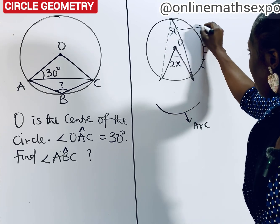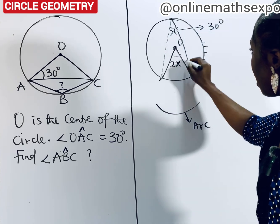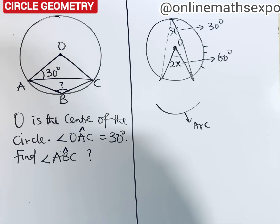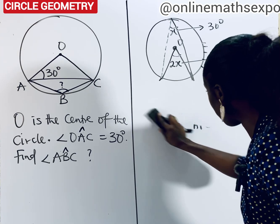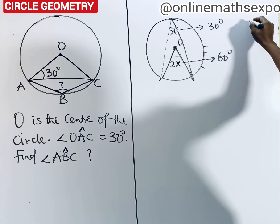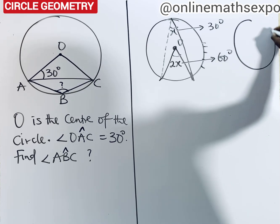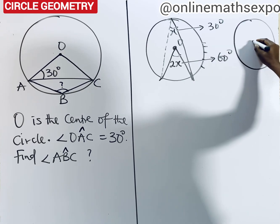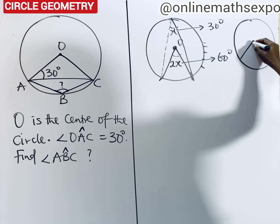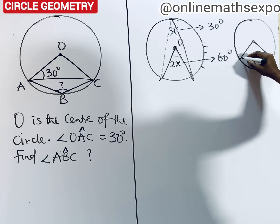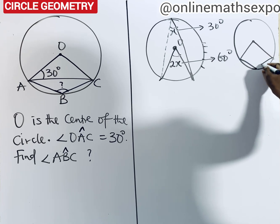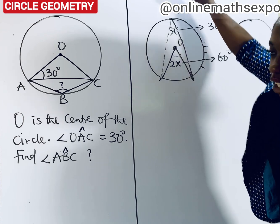The theorem says: if the angle at the center is 2x, then the angle at the circumference will be x. So what it means is that if the angle here is 30, the angle at the center is going to be times 2. Now let me remind you of another type of this theorem — when you have the same circle with the center, and it forms an angle at the center.